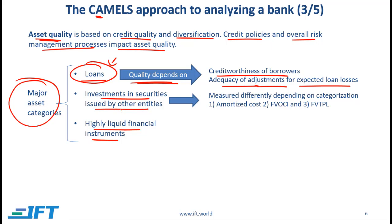Investments and other securities are measured differently depending on how they are categorized. Some instruments are measured at amortized cost, so their value does not change on the balance sheet; we need to determine whether there has been any impairment and whether that impairment has been factored into the book value. Others are measured at fair value through other comprehensive income, where unrealized gains and losses go through OCI, requiring analysis of how well those are being measured. Finally, fair value through profit and loss means all unrealized gains and losses flow through the income statement.